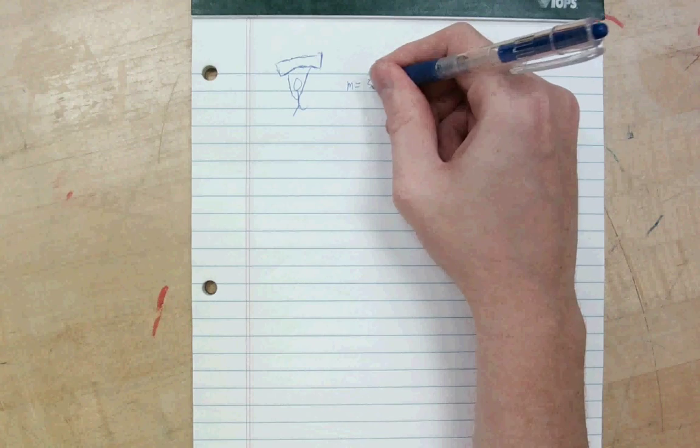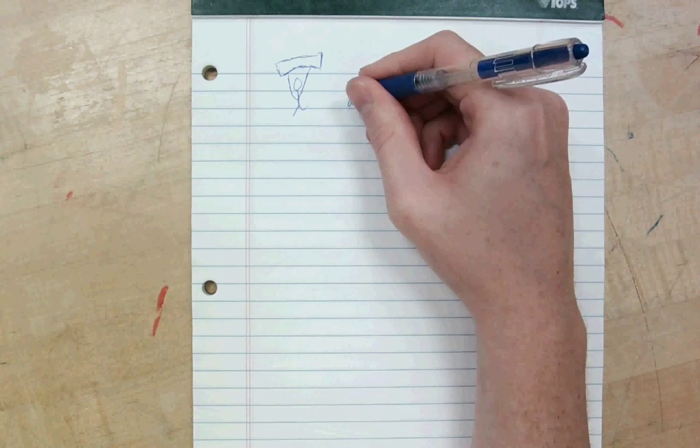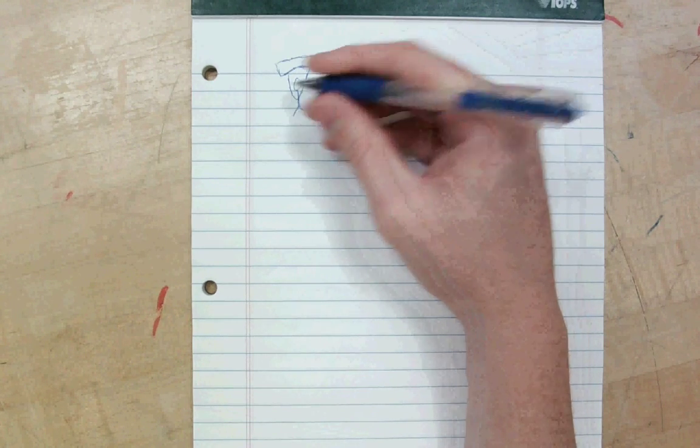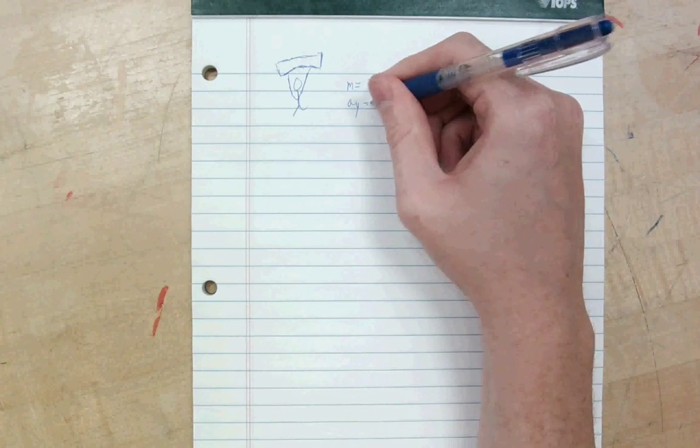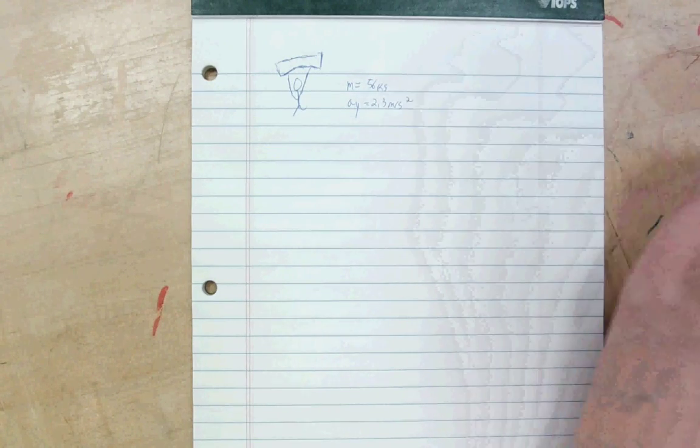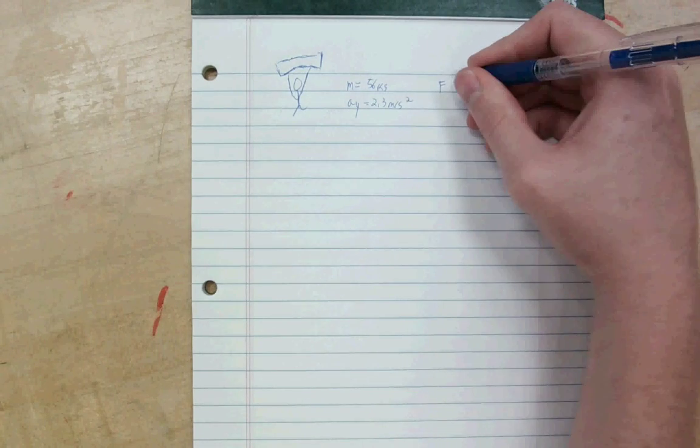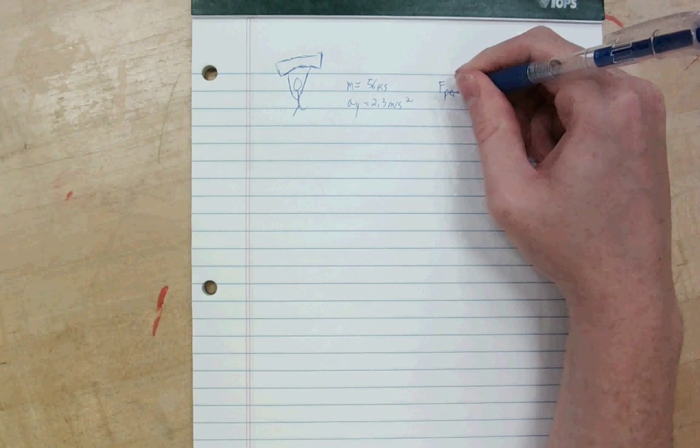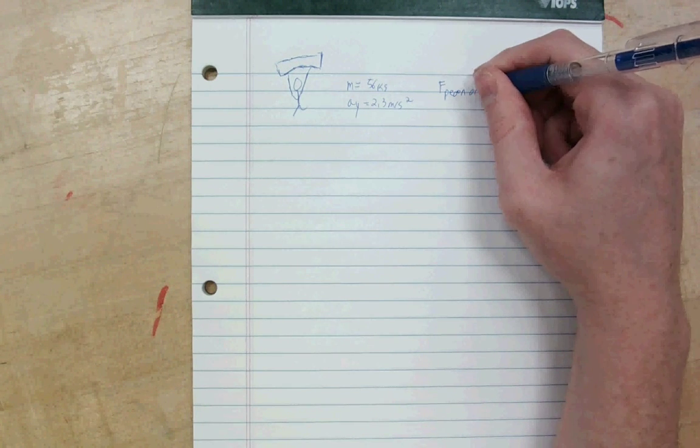Let's say we know the mass of the person, and make it 56 kilograms, and the person's acceleration in y, downward, 2.3 meters per second squared. I want to know, what is the force of the person on the parachute? So, how much is the person pulling on the parachute via these strings?